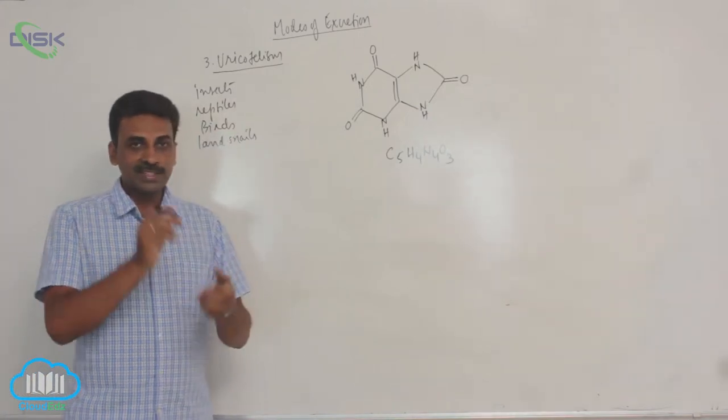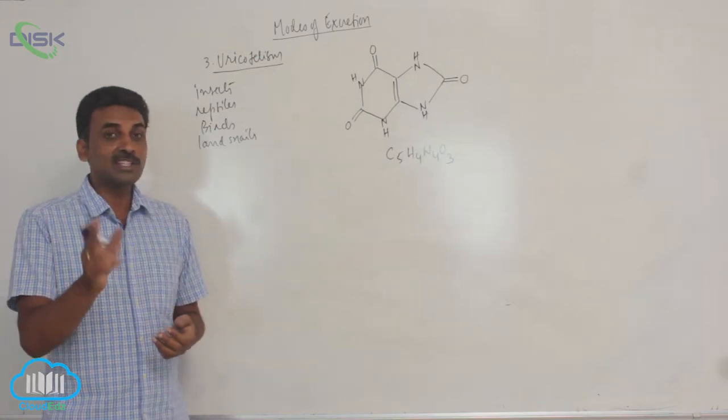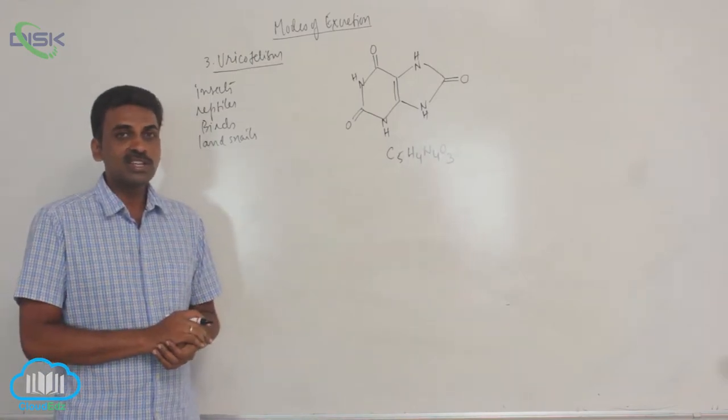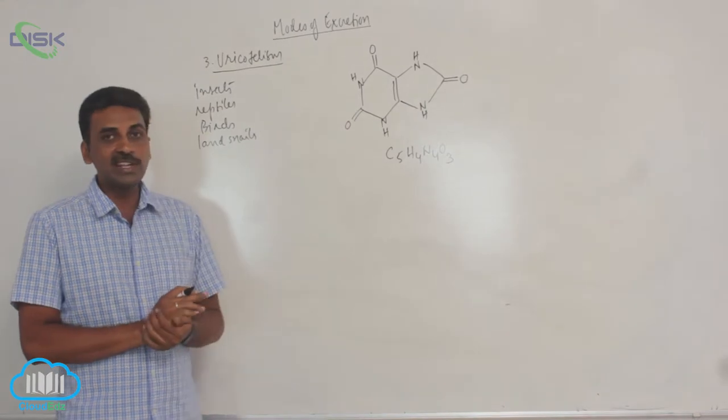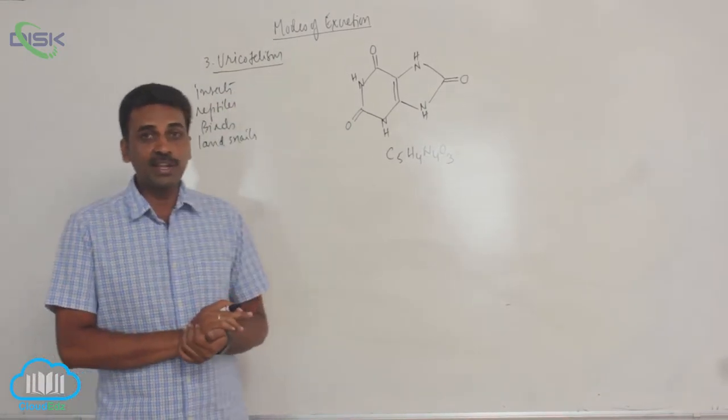Birds excrete uric acid pellets. Terrestrial gastropods, the terrestrial gastropods includes the land snails like helix. So all these animals they excrete uric acid.